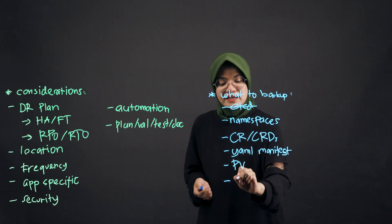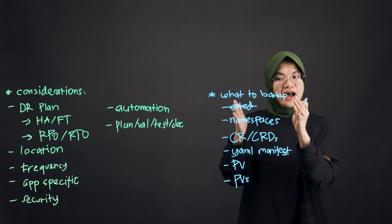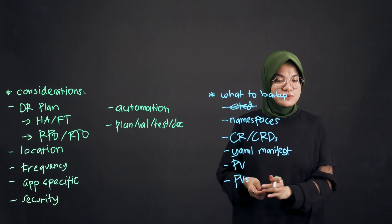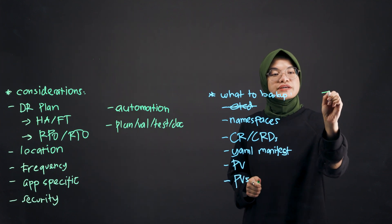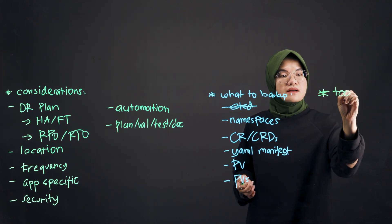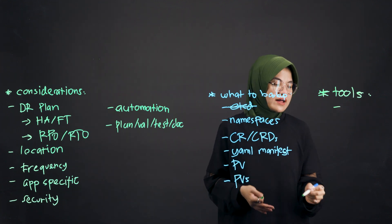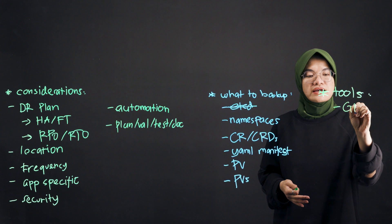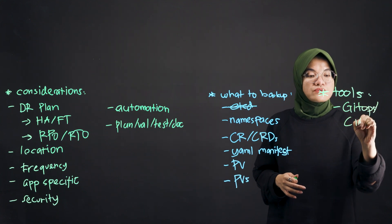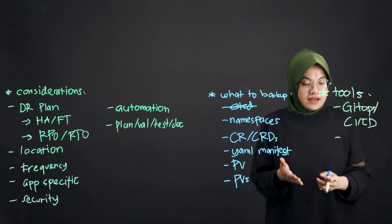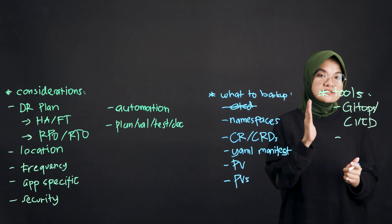That covers the overall ideas of what you can backup and restore. When it comes to tooling that can help with these processes, as I mentioned about automation earlier, you may want to consider things like GitOps or a CI/CD pipeline. If you can insert backup and restore processes as part of your GitOps and CI/CD tooling, it will help your team tremendously because you can repeatedly perform this process in the future. Repeatability is the key here.